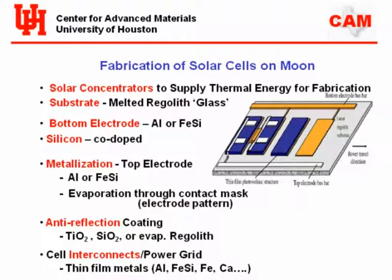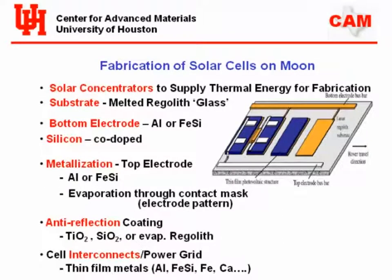All the deposition — melted regolith glass, bottom electrode, n and p-doped silicon, top electrode, anti-reflection coating, and bus bars to interconnect everything — is done in one sequence as the crawler moves along the surface of the Moon. The materials used are all available on the Moon: silicon for the solar cell, aluminum or iron silicide for the metal contact, silicon dioxide or titanium oxide for the anti-reflection coating, and aluminum, iron silicide, or calcium for the power grid interconnects. Calcium is a great electrical conductor — we don't use it on Earth because it oxidizes, but there's no oxygen on the Moon.